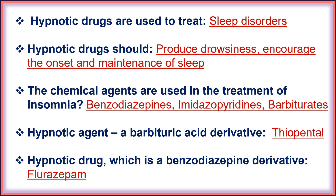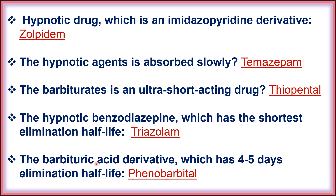There are numerous other benzodiazepine drugs like diazepam, clonazepam, nitrazepam, etc. A hypnotic drug which is an imidazopyridine derivative is zolpidem.